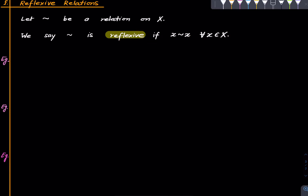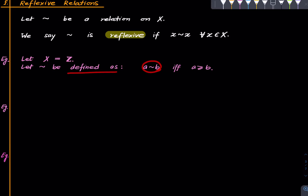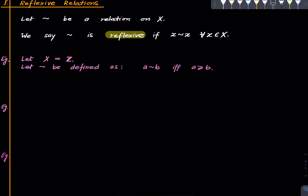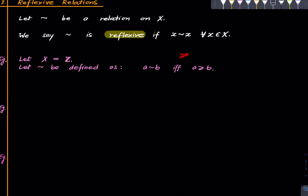Let's see examples of reflexive relations. Suppose X is the set of all integers and define tilde as: a tilde b if a is greater than or equal to b. In other words, tilde is the subset {(a, b) of integers cross integers such that a ≥ b}. This is reflexive because for any x in Z, x ≥ x, which implies x tilde x.